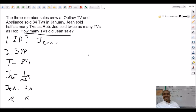No. Right? So, we have three people. And how much did they sell all together? 84. So, we can put equal 84. Right? We can put Rob, the number of TVs he sold, plus Jed, the number of TVs he sold, plus Jean, the number of TVs she sold. Equal 84, right? Because if the total TVs that they sold were 84, all you have to do is add these up.